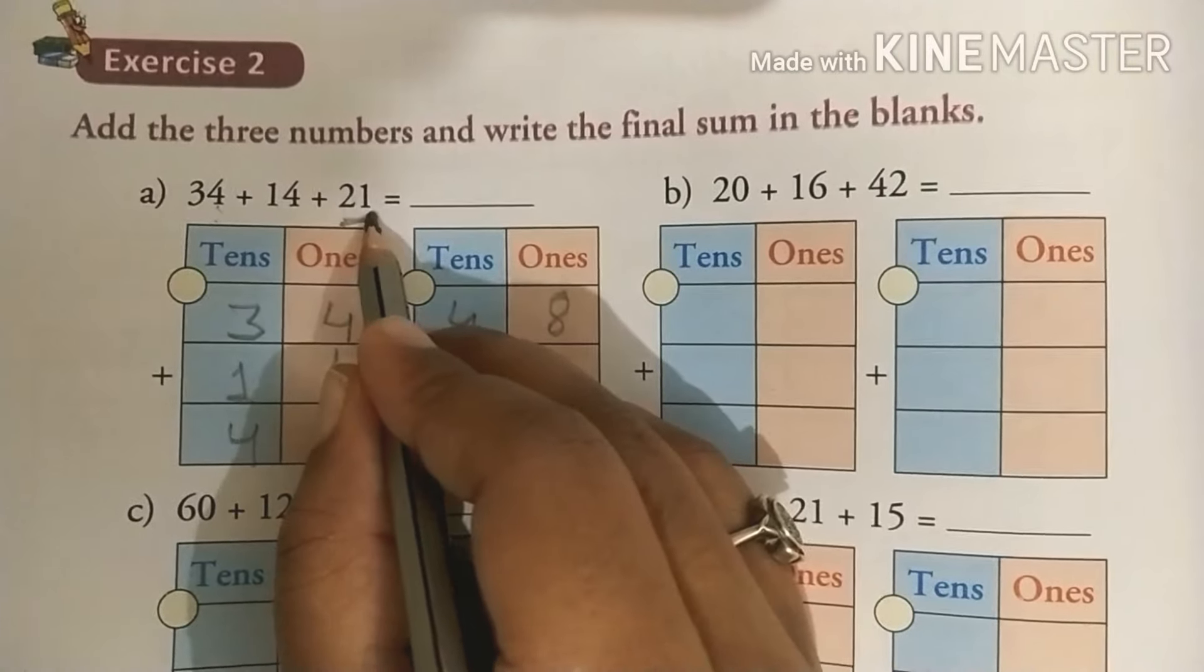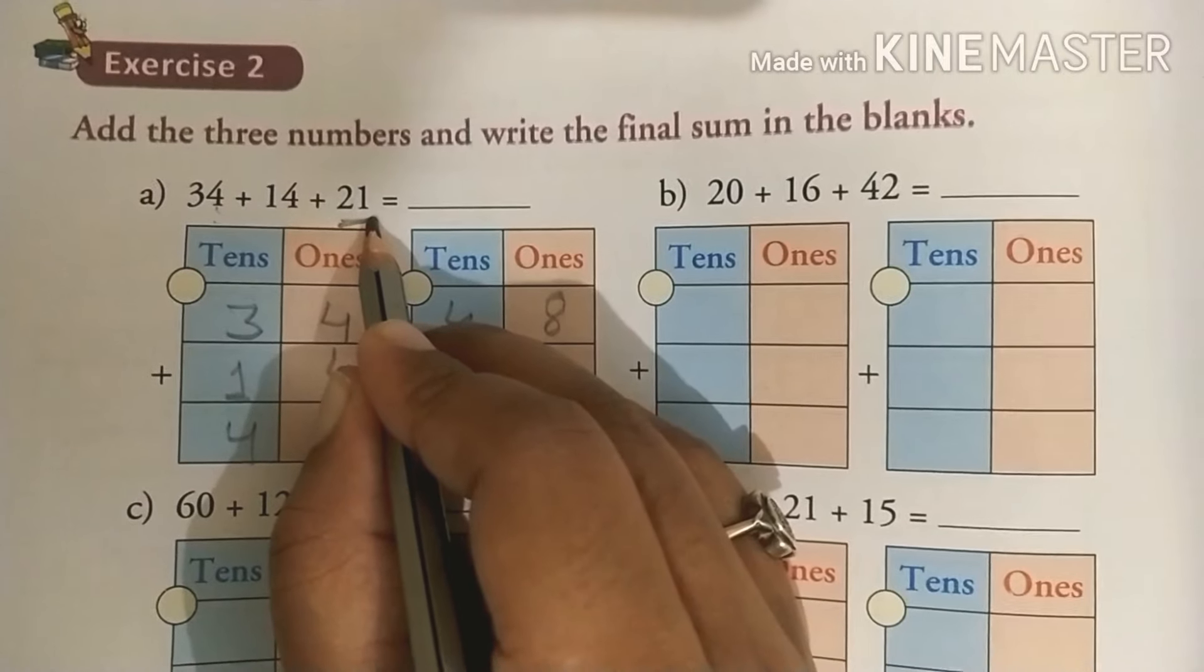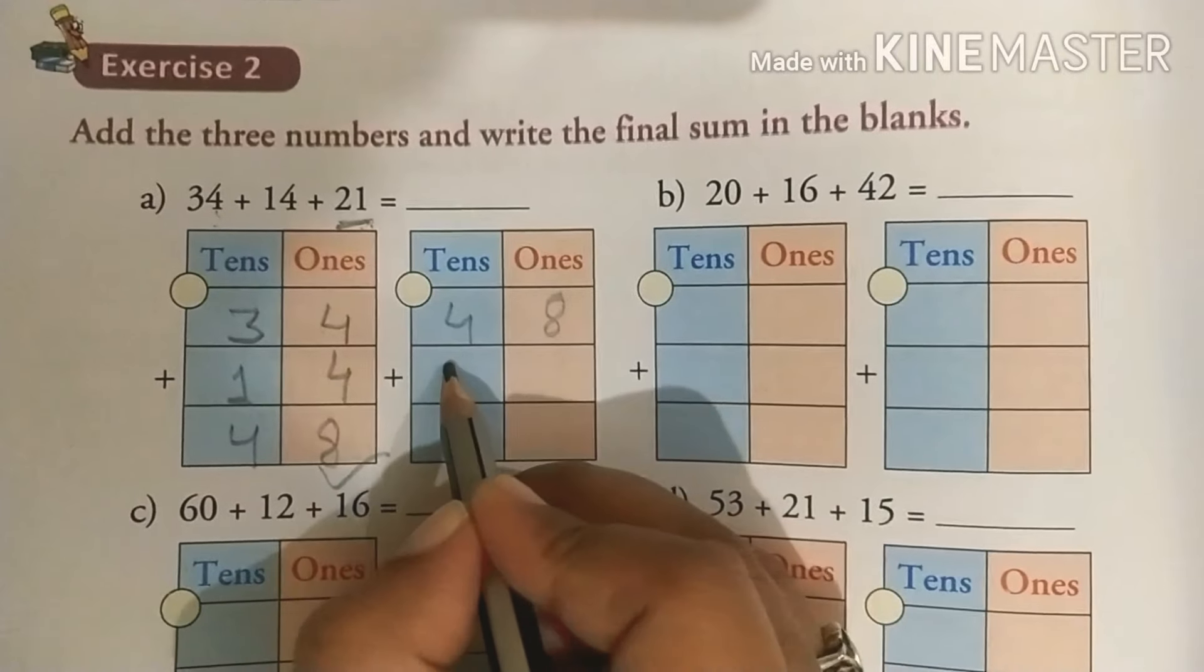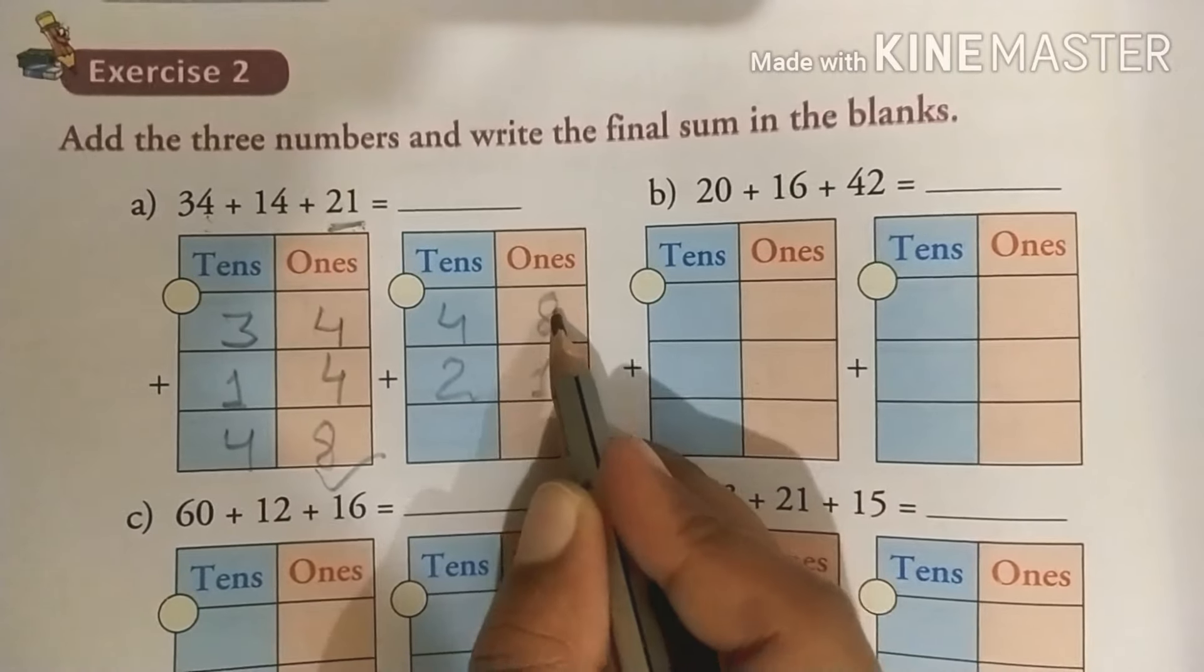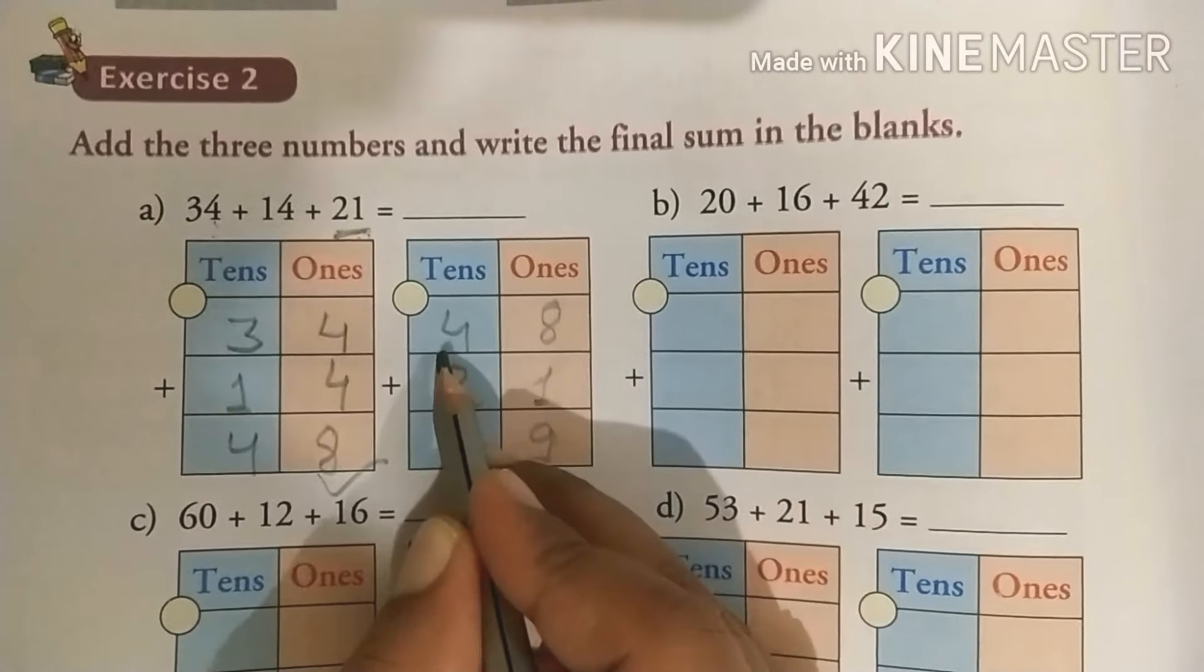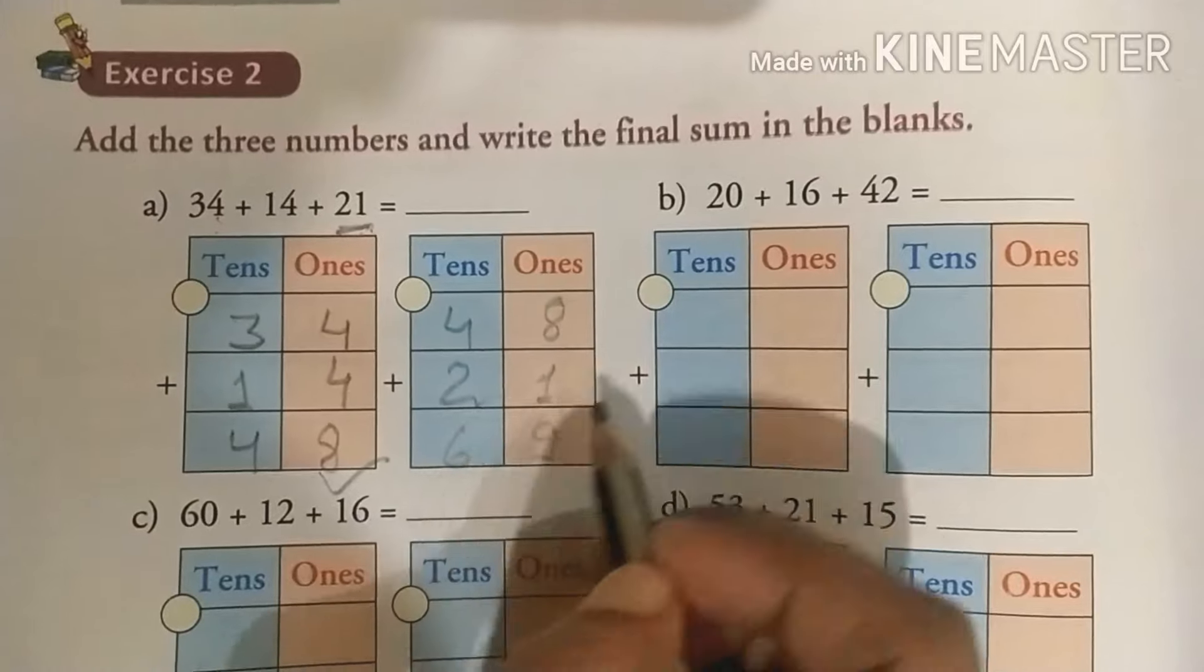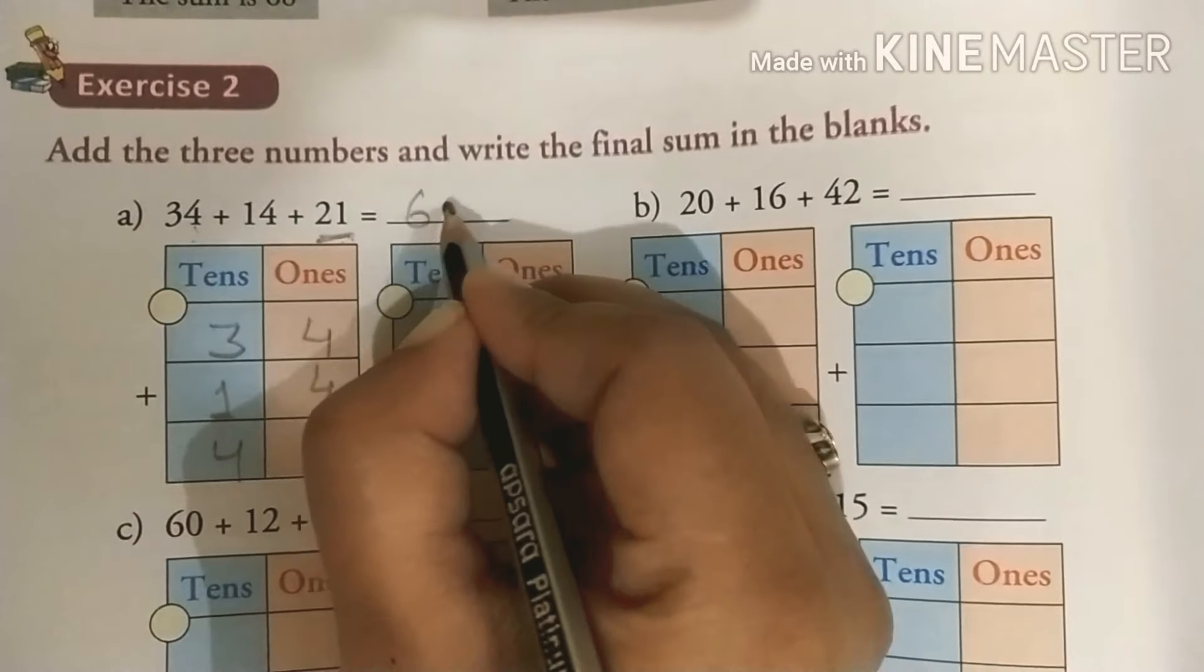Then yeh jo number hai, third number, yeh bacha hai abhi, hamne isko add nahi kiya. Toh is number ko abhi haan par write kar dhenge. Then we will add this number. 8 plus 1 is 9, 4 plus 2 is 6. So the total number is 69.